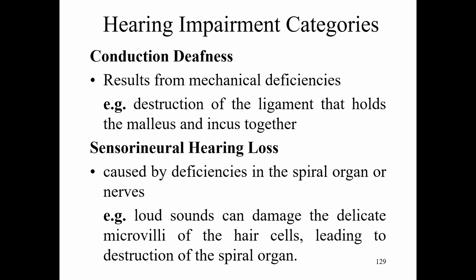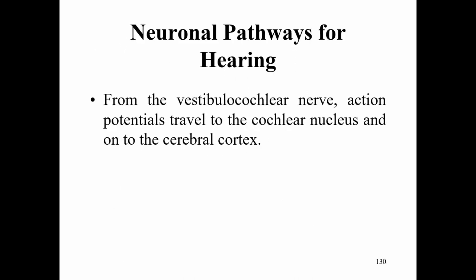Hearing impairment categories include conductive deafness, which results from mechanical deficiencies such as destruction of the ligament holding the malleus and incus together. Sensorineural hearing loss is caused by deficiencies in the spiral organ or nerves — loud sounds can damage the delicate microvilli of the hair cells, leading to destruction of the spiral organ. Neuronal pathways for hearing travel from the vestibulocochlear nerve to the cochlear nucleus and on to the cerebral cortex.